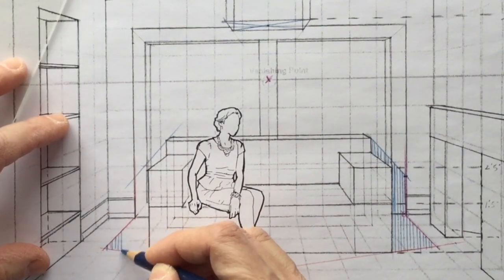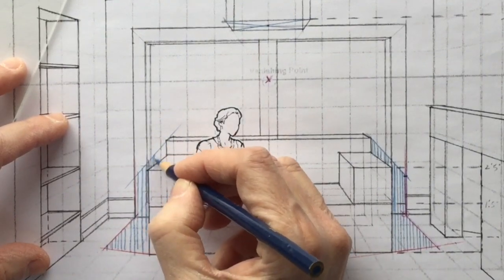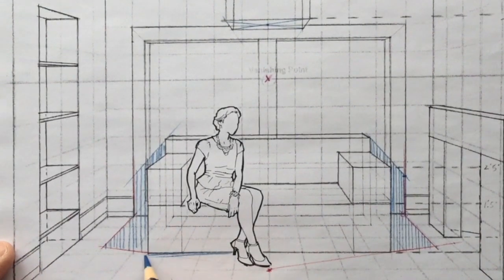And you'll use your ruler, I'm going to go a little fast here for the recording, so I don't waste too much time. Now on the sofa itself, there will be shadow, of course, underneath, there's always shadow under.